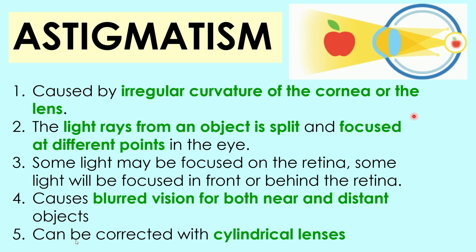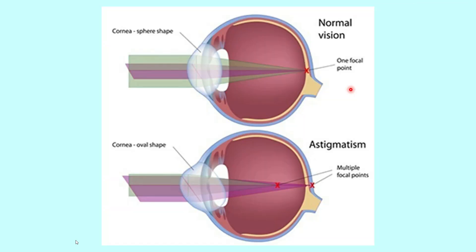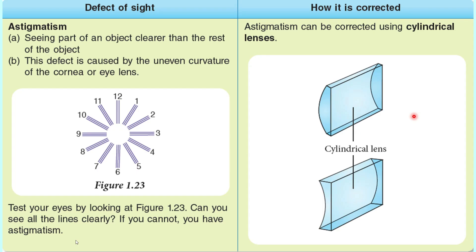Astigmatism can be corrected by wearing glasses with cylindrical lenses. As you can see here, a person with normal vision might have only one focal point. But for a person with astigmatism, they might have multiple focal points. You may test your eyes for astigmatism by looking at figure 1.23. If you can see all the lines clearly, it means that you don't have astigmatism. But if you're not, you might have astigmatism.